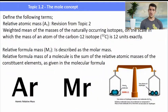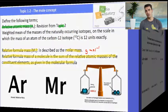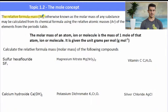So a couple of definitions. The first definition is from Topic 2, Relative Atomic Mass (AR). It's the weighted mean of the masses of the naturally occurring isotopes on the scale in which the mass of an atom of carbon-12 is exactly 12 units. The relative formula mass (MR), also described as the molar mass (MM), is the sum of the relative atomic masses of the elements as given in the molecular formula.